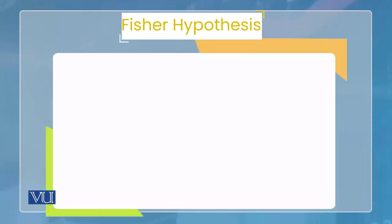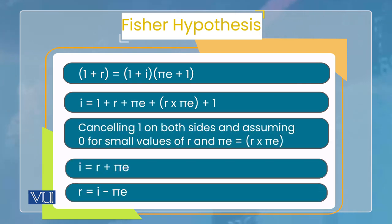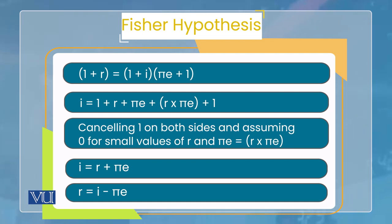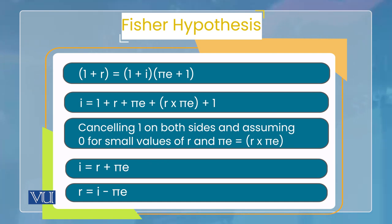Now we derive the formula using the Fisher hypothesis, in which ex-ante real interest rate is used — with a small change it becomes ex-post. The Fisher hypothesis states: 1 plus nominal interest rate (I denotes nominal interest rate, R denotes real interest rate, and πE denotes expected inflation rate — π is inflation rate and E means expected). So the Fisher hypothesis is: (1 + I) = (1 + R)(1 + πE). If you expand the right side it becomes: 1 + R + πE + R×πE.